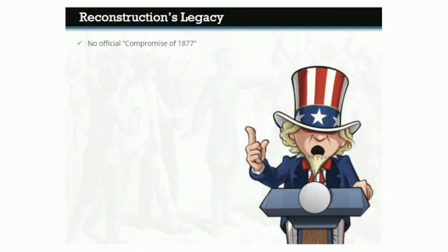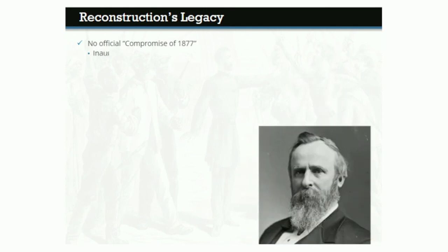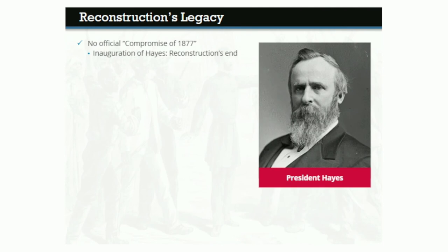Officially, there was no Compromise of 1877 — the informal agreement between Democrats and Republicans was never written down, and many details remain unclear. But the inauguration of President Hayes marks the end of Reconstruction. Would things have turned out differently if Hayes had won a more decisive victory? It's unlikely. Reconstruction was over in all but name by the 1876 election, and neither candidate was enthusiastic about continuing it.